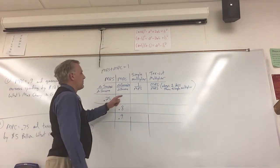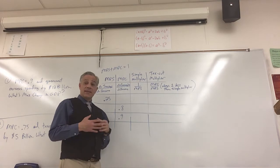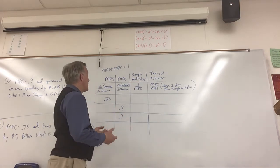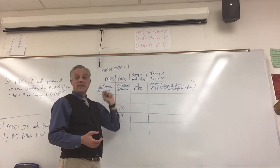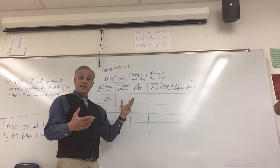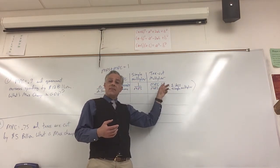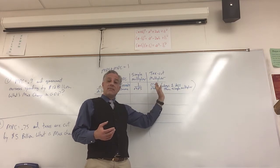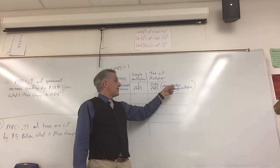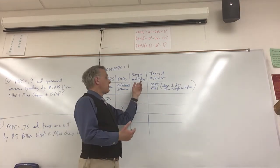More importantly is the formulas for a simple multiplier, which is 1 over MPS. So what probably is going to happen is you're going to be given the MPC, you need to figure out the MPS, then plug it into here and calculate the multiplier. The simple multiplier is 1 over MPS, and then the tax cut multiplier is MPC over MPS.